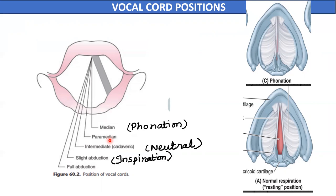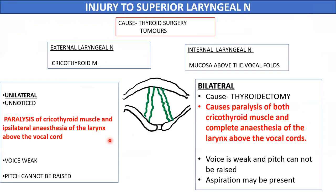We will now discuss paralysis of the vocal cord due to injuries to either the superior laryngeal nerve or the recurrent laryngeal nerve. Injury to the superior laryngeal nerve can occur during thyroid gland surgeries or due to neuritis. The superior laryngeal nerve has two branches: the external laryngeal nerve, which supplies the cricothyroid muscle — a tensor of the vocal cord — and the internal laryngeal nerve, which supplies the mucosa above the vocal folds.